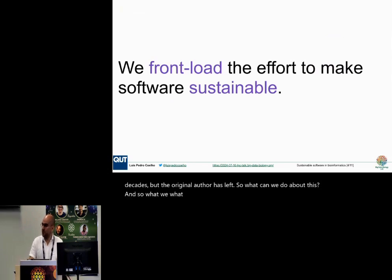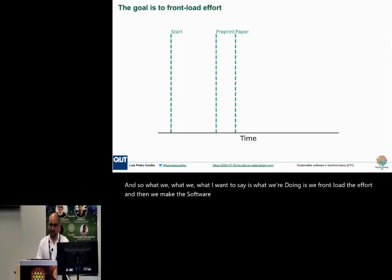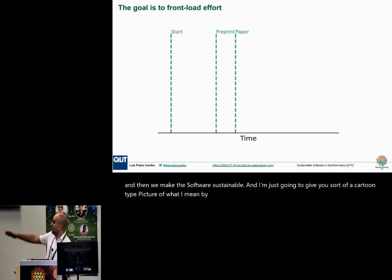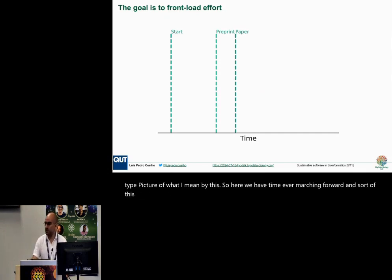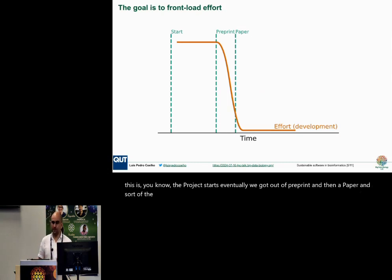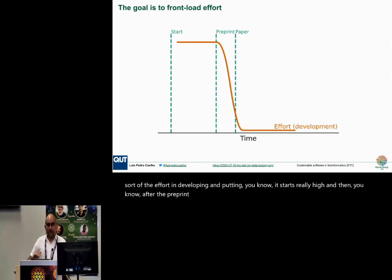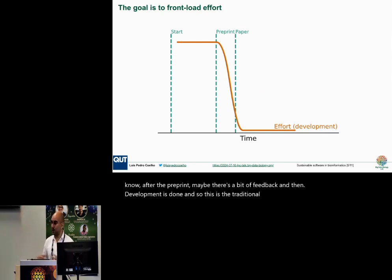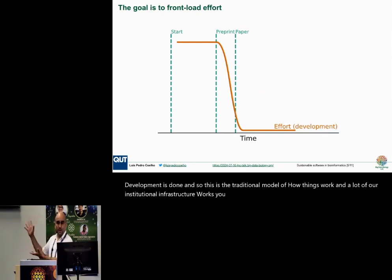What we're doing is we front-load the effort and then make the software sustainable. To give a cartoon-type picture: time marches forward, the project starts, eventually we get out a preprint and then a paper. The effort in developing starts really high, then after the preprint there's a bit of feedback, development is done — and that's the traditional model of how things work. A lot of our institutional infrastructure expects that this is what papers look like.